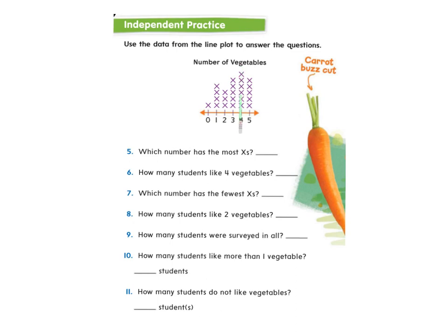I can see that this one is the tallest — it has the most number of X's: one, two, three, four, five, six X's. The second most is only five, which appears on two other numbers. So which number has the most X's? Four. Four vegetables liked is the most popular. How many students like four vegetables? There are six students who like four vegetables. Which number has the fewest X's? Right here is zero — there's one student who says he doesn't like any vegetables.